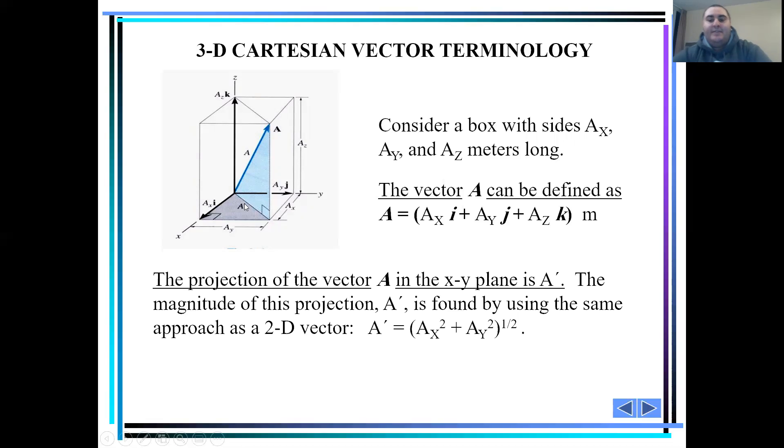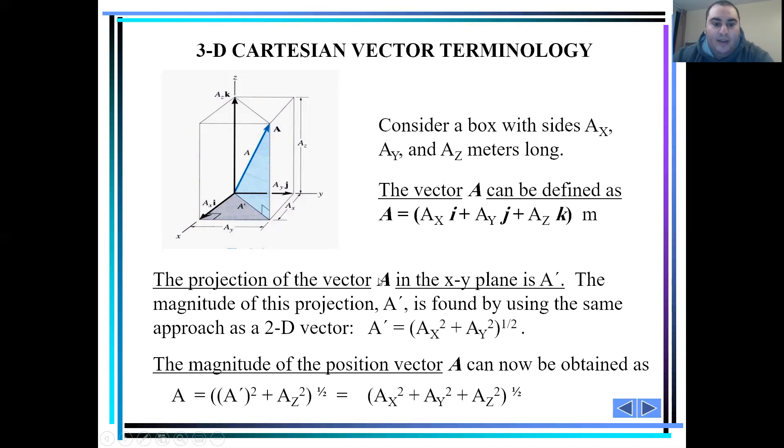Is found by using the same approach as 2D vectors. Basically, A hat equals the square root of ax squared plus ay squared. And the magnitude of the position vector A can now be obtained as the square root of A hat squared plus az squared, which equals the square root of ax squared plus ay squared plus az squared.